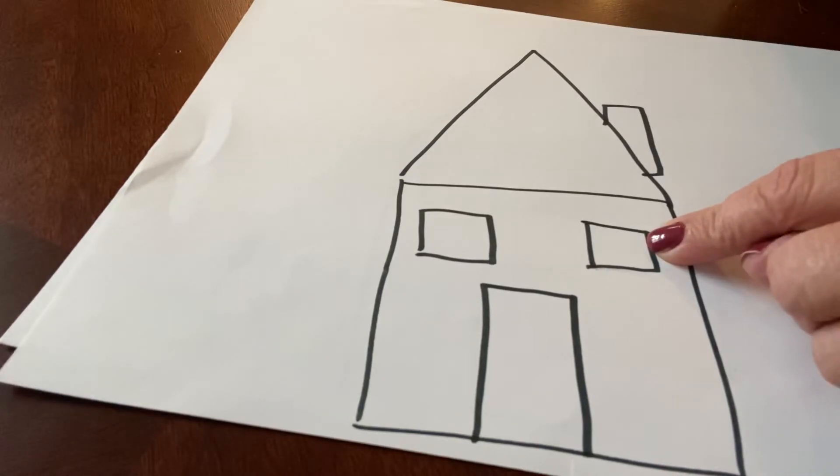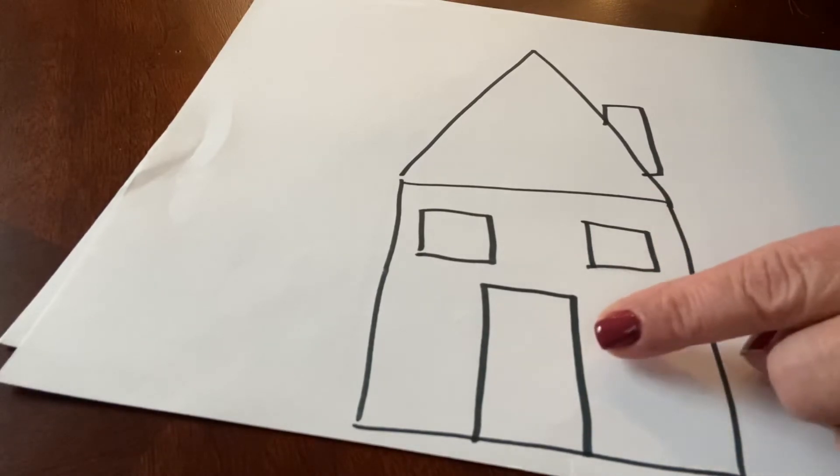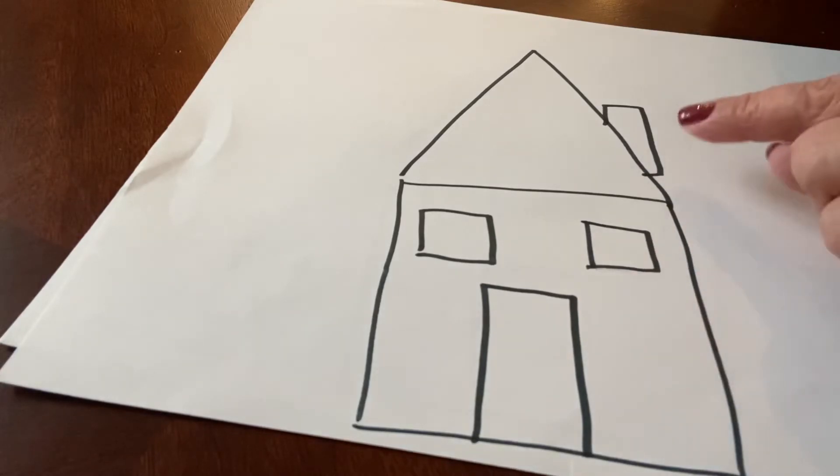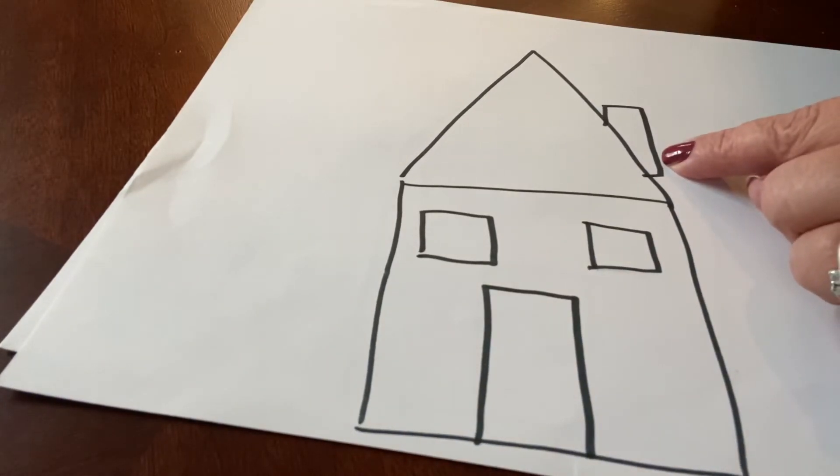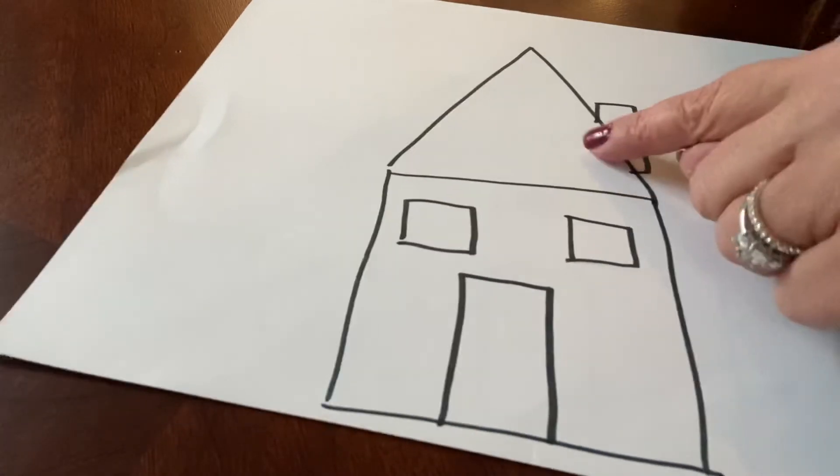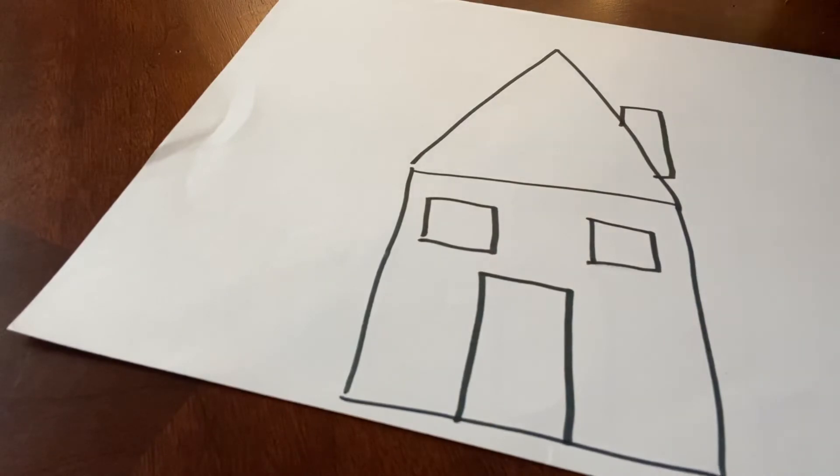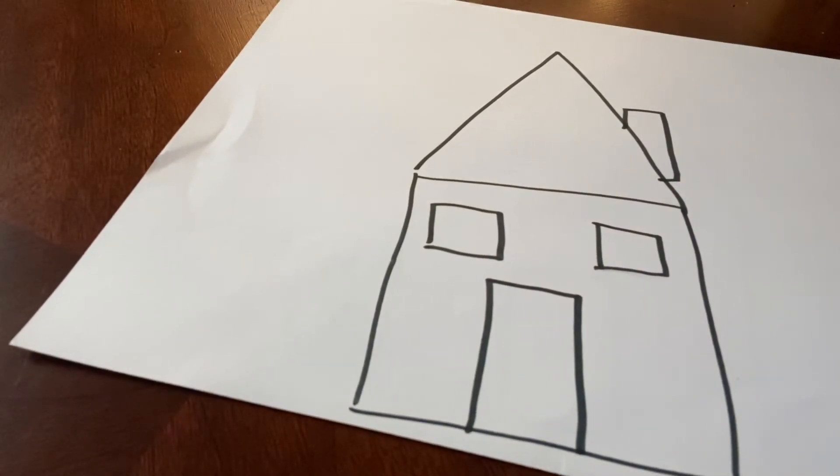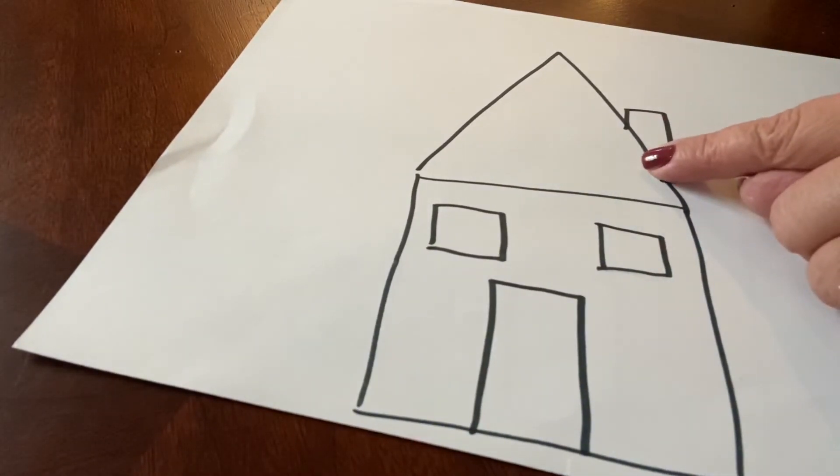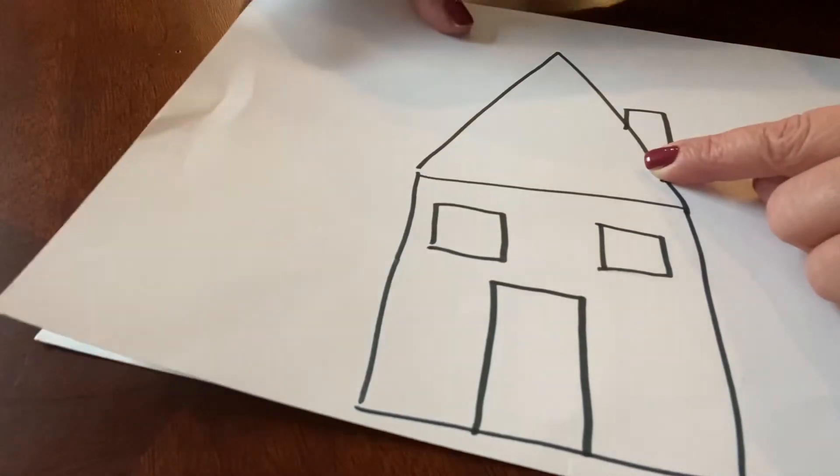How many rectangles do we have? Do you remember what we said? One is the door, and this one is two. That makes another rectangle. Good job. Now what about this shape? How many triangles do we have? I see one. Very good.